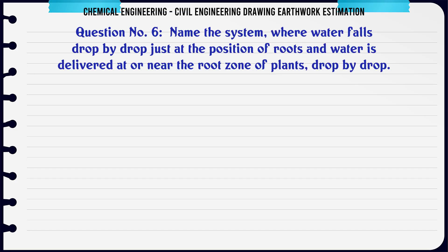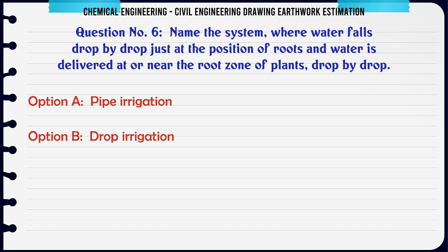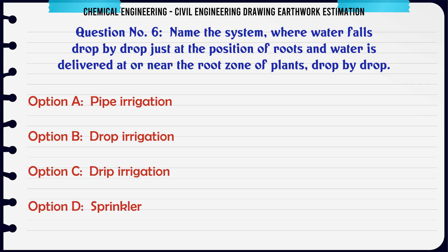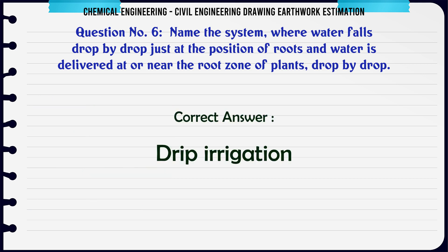Name the system where water falls drop by drop just at the position of roots, and water is delivered at or near the root zone of plants drop by drop. A. Pipe Irrigation. B. Drop Irrigation. C. Drip Irrigation. D. Sprinkler. The correct answer is: Drip Irrigation.